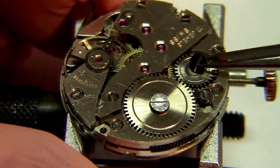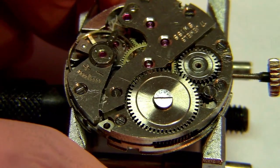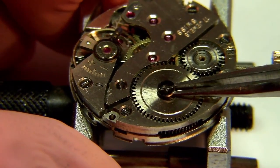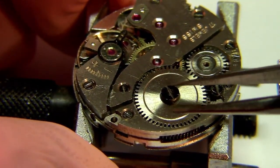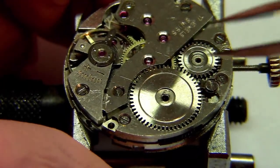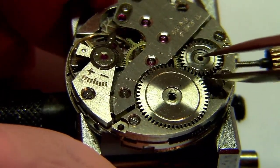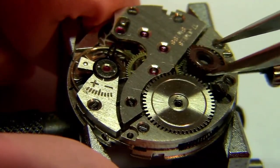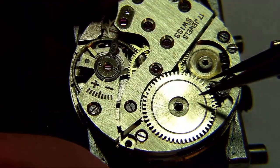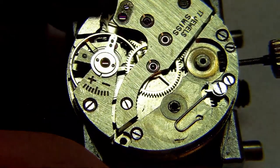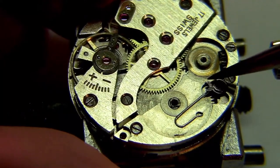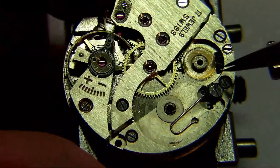Here I'm going to remove these screws that are already loosened so I can show you what's below the barrel bridge, which is the barrel among other things. Removing the transmission wheel and the ratchet. Here you can see the click spring—I have to do this carefully so the spring doesn't fly away.